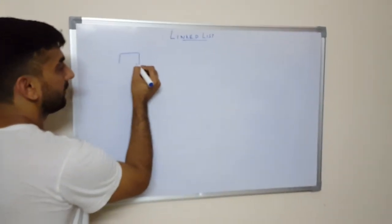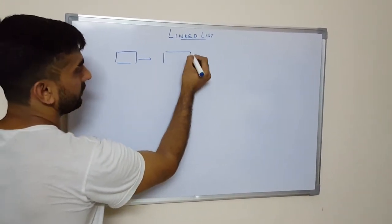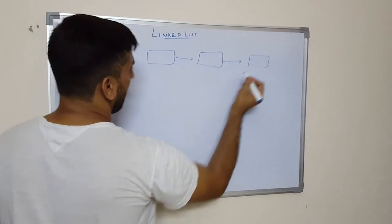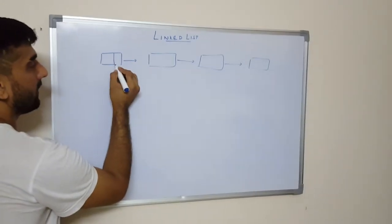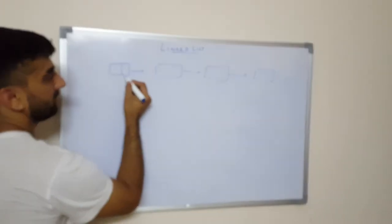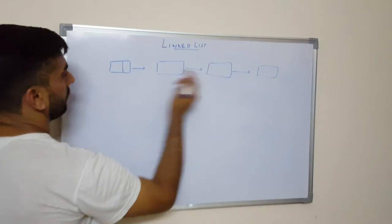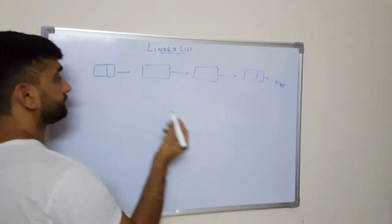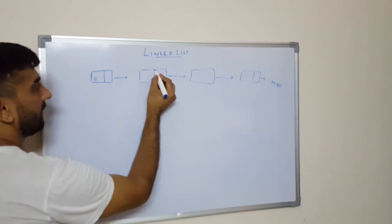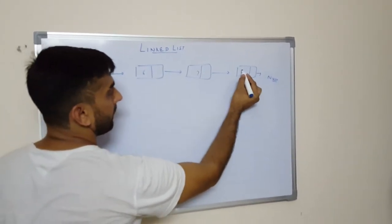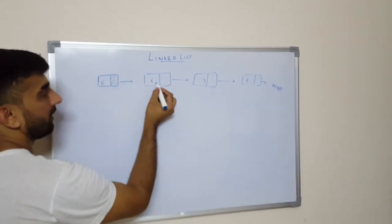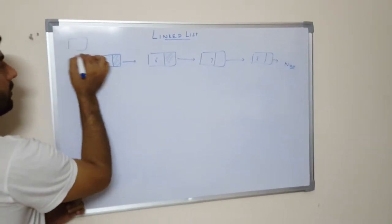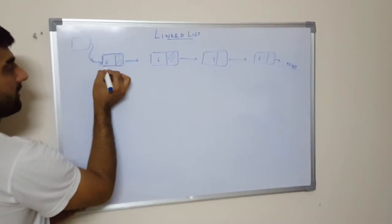A linked list is basically a linear data structure which consists of nodes, and each node consists of two parts. One part is the data part and the other part is the memory address of the next node. For example, this is my linked list and it has four nodes, and the last node will always point to null. The first node is always pointed to by the head node, which contains the memory address of the first node.